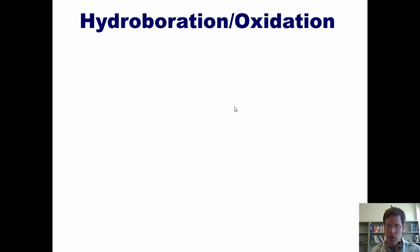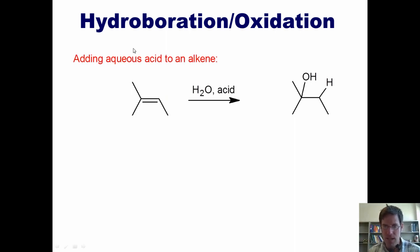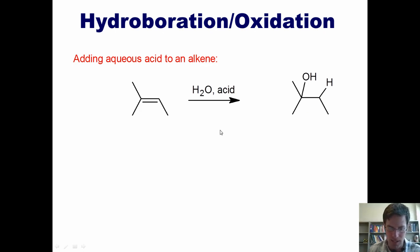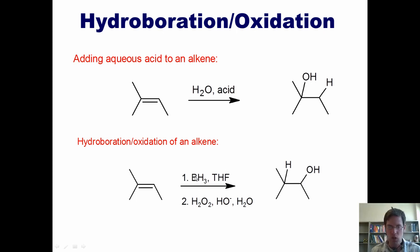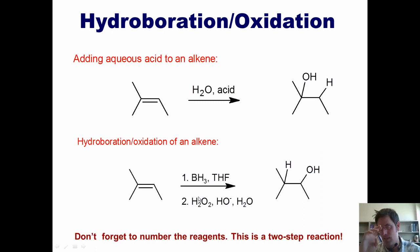When we add water to an alkene in the presence of catalytic acid, we place the hydroxyl group on the most stable carbocation to give the Markovnikov product. But if I want the OH at the other position, I can do hydroboration oxidation. I take the same starting material and treat it in a two-step sequence with borane, followed by basic peroxide, and it places the OH on the anti-Markovnikov position. You must include both steps in the sequence to be correct.